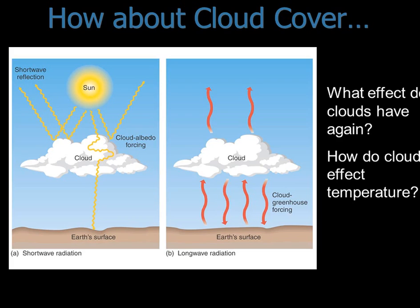Cloud cover: clouds tend to moderate temperature. During the day, clouds reflect a lot of incoming light, keeping things cooler. At night, clouds absorb a lot of long-wave energy coming off the Earth's surface and re-emit it back down — they act like a blanket. So during the day they keep you cooler, and at night they keep things warmer. They moderate temperature.